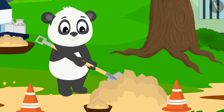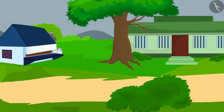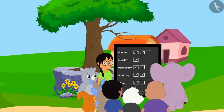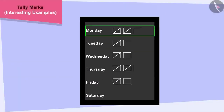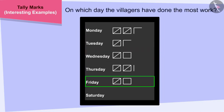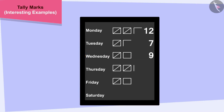One week got over and all the villagers worked hard and got the road fixed. All the villagers are eager to know on which day the most work was done. Children, can you look at this table and tell on which day the villagers have done the most work? We will count the tally marks of the work done every day and write the number. The maximum work — 12 hours — was done on Monday.